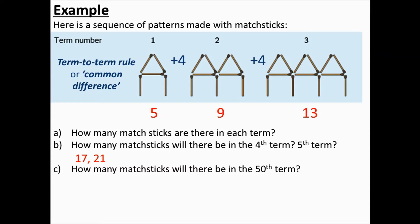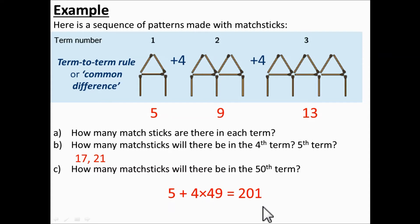We can use this to find the number of matchsticks in the fiftieth term. To get to the second term we're adding four once; to get to the third term we're adding four twice; to get to the fourth term we add four three times, and so on. It follows that we would have to add four forty-nine times to reach the fiftieth term. We take five, which is the first term, and add four forty-nine times to get two hundred and one.